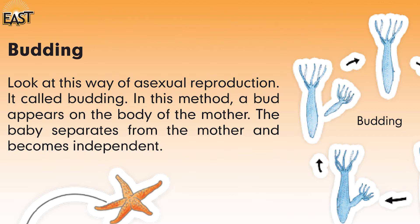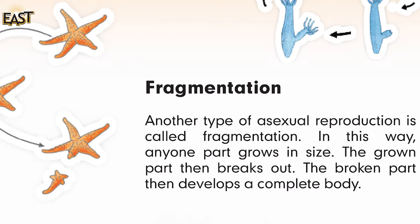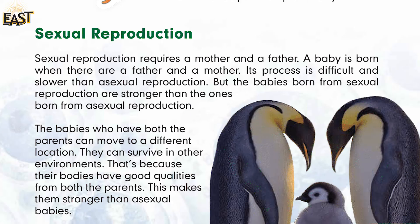The baby separates from the mother and becomes independent. Fragmentation — another type of asexual reproduction is called fragmentation. In this way, any one part grows in size. The grown part then breaks off, and the broken part then develops a complete body.